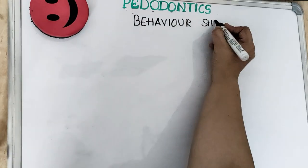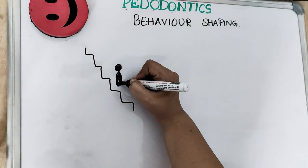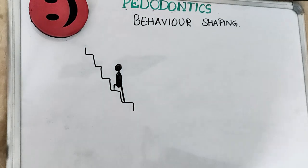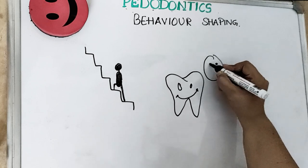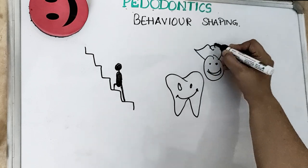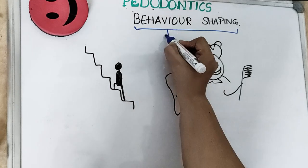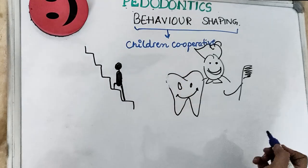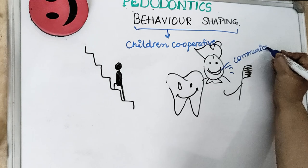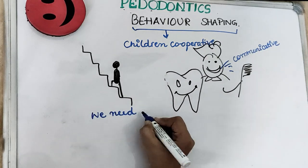Behavior shaping is a step-by-step procedure to make the child involved in dental therapy. It means shaping the behavior by the dentist to teach a child how to behave in a dental clinic. Children need to be cooperative during the dental procedure and communicative, because children cannot grasp the overall procedure in a single explanation.